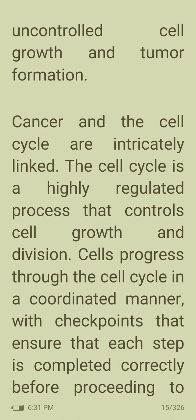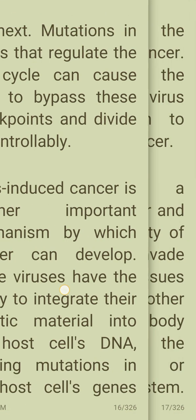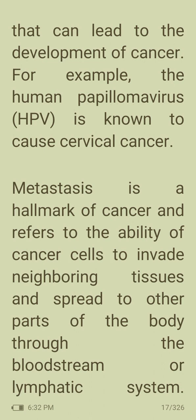Cancer and the cell cycle are intricately linked. The cell cycle is a highly regulated process controlling cell growth and division, with checkpoints ensuring each step is completed correctly. Mutations in genes that regulate the cell cycle can cause cells to bypass these checkpoints and divide uncontrollably. Some viruses can also cause cancer by integrating their genetic material into the host cell's DNA, causing mutations — for example, human papillomavirus is known to cause cervical cancer.